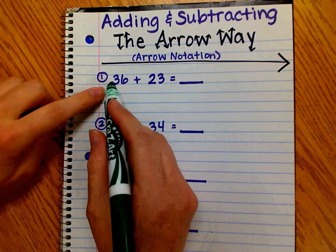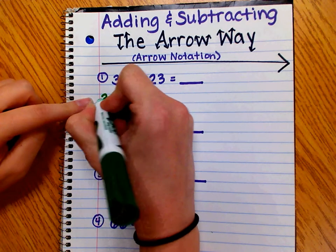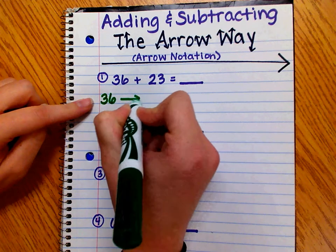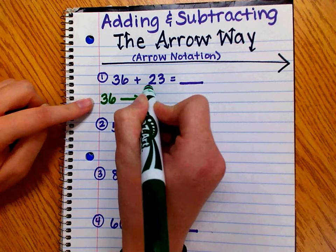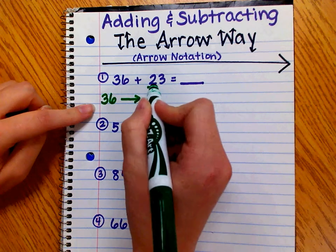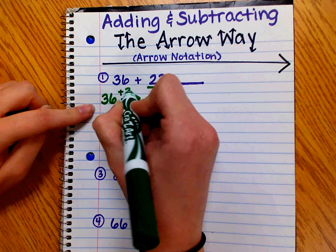If we start with 36 plus 23, we know we're going to start at the number 36. I'm going to draw an arrow and the first thing I'm going to do is add the value of the tens. There's a 2 in the tens place, so I know 2 tens equals 20.